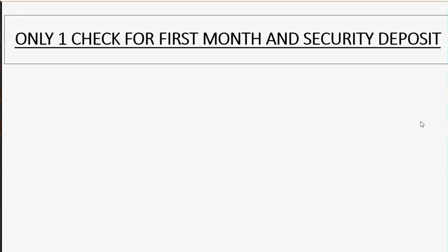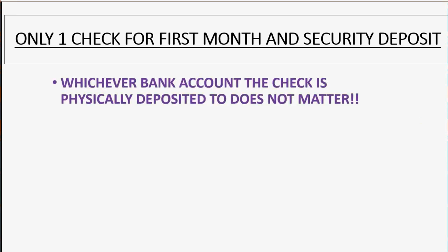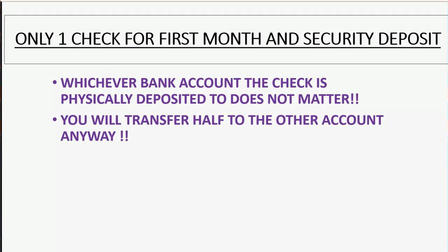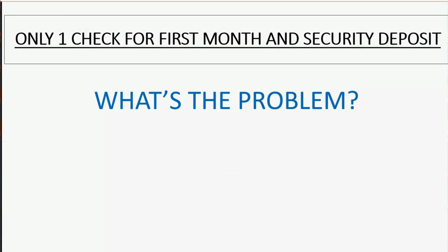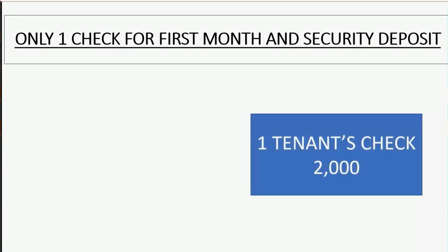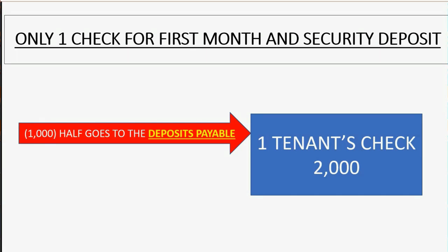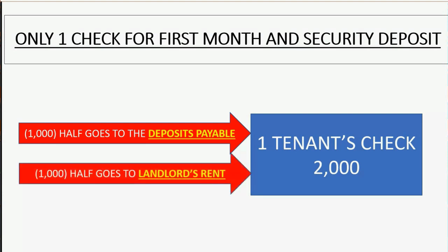If you received only one check for the first month's rent and security deposit, then whichever bank account the check is physically deposited to does not matter — you will transfer half to the other account anyway. Half of that check belongs in the tenant's security deposit payable, and the other half belongs in the normal monthly payout as rent to the landlord.